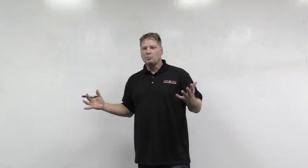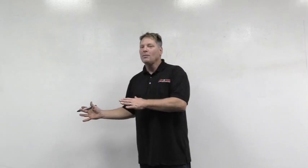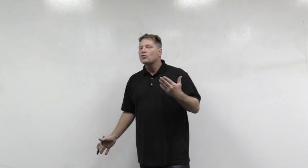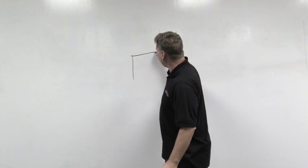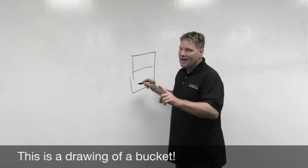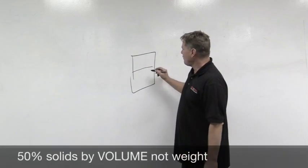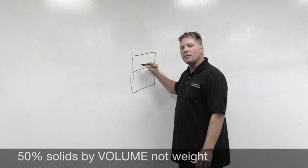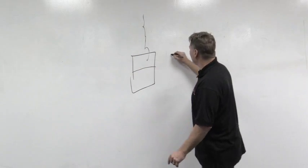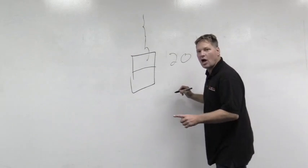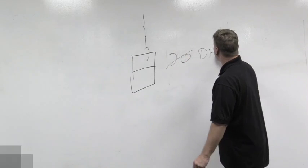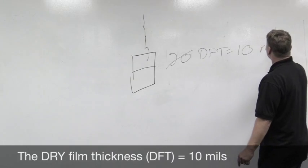Now that we know our spread rate and the wet film thickness we're putting this material on, we want to calculate what our dry film thickness is. So if a gallon of paint is 50% solids by volume — not by weight, but by volume — we know that 50% of this can of paint is going to evaporate into the air. So if we put it down at 20 mils and half of that goes away, our dry film thickness is going to equal 10 mils.